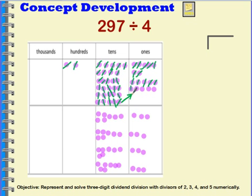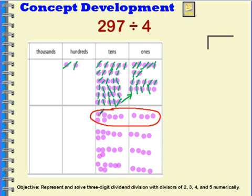Using the same process as before, I distribute the ones into the four groups. Now I have a group — one of my four groups — and inside this group I have seven tens and four ones. Seven tens and four ones is equal to seventy-four.